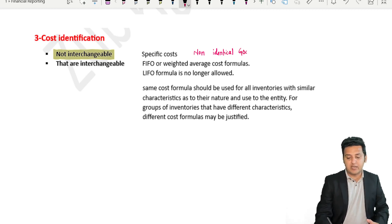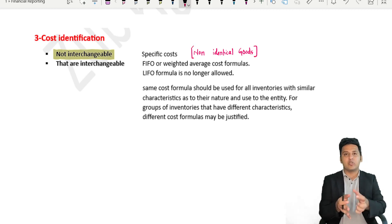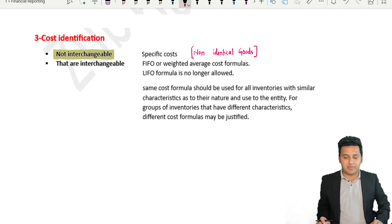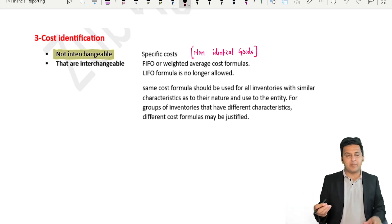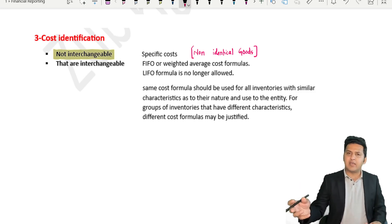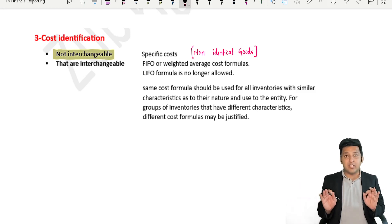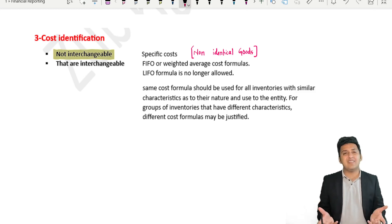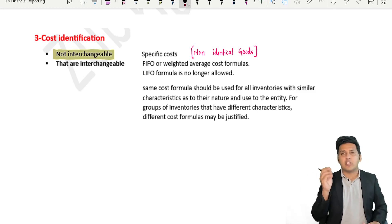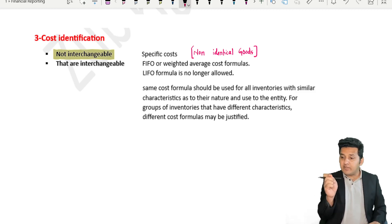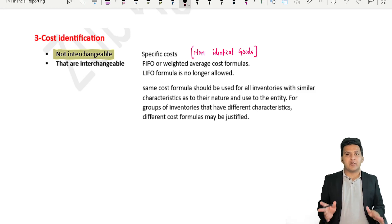For example, if I trade goods like a generator, a bike — I have a bike and a generator. These are non-identical goods. Different items like TV, bike — they should be allocated separately. There is no confusion for non-identical goods.